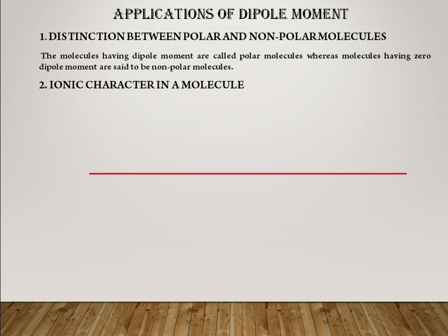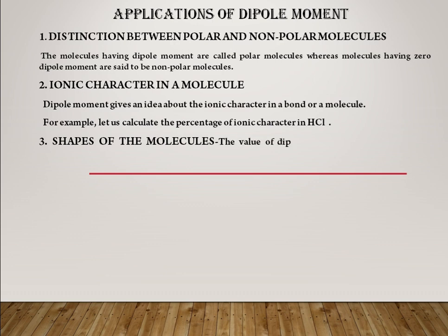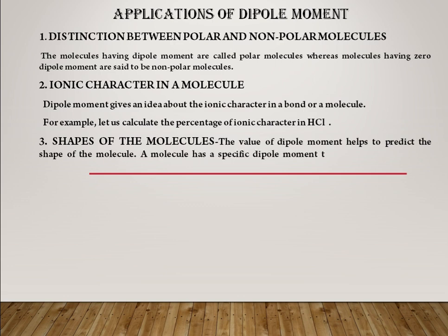The second application concerns ionic character in molecules. The dipole moment gives an idea about the ionic character in a bond or molecule. For example, we can calculate the percentage of ionic character in HCl. The third application relates to the shapes of molecules. The value of dipole moment helps to predict the shape of a molecule. When a molecule has a specific dipole moment, its shape will not be symmetrical.